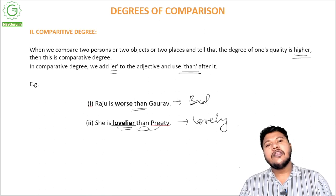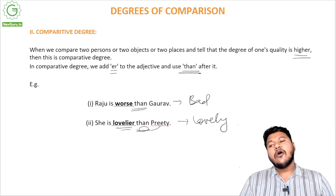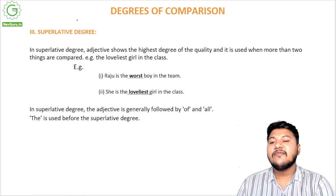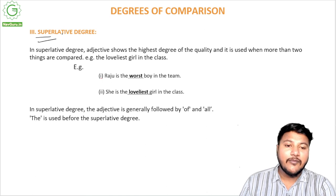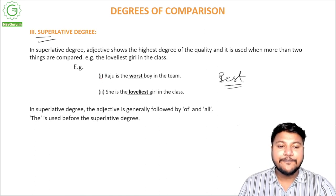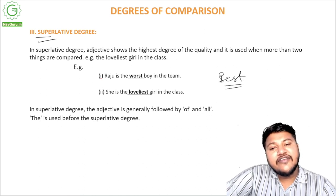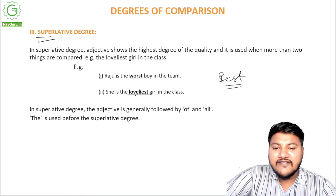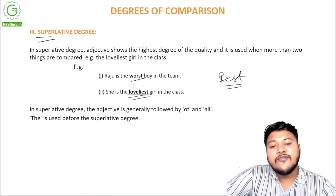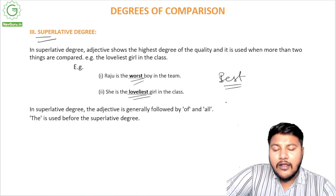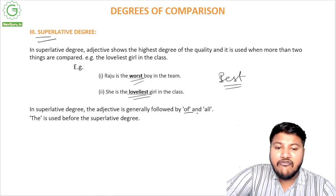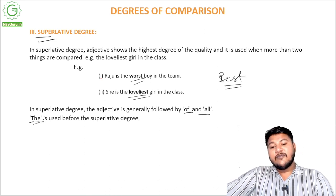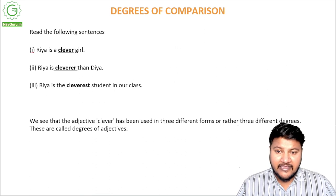When comparing more than two entities at once, we use superlative degree. As the name suggests, it is the 'super' degree — the highest. In superlative degree the adjective shows the highest degree of quality and is used when more than two things are compared. For example: 'the loveliest girl in the class,' 'Raju is the worst boy in the team.' The superlative is usually followed by 'of all' or 'in the class,' and the article 'the' is always used before the superlative.